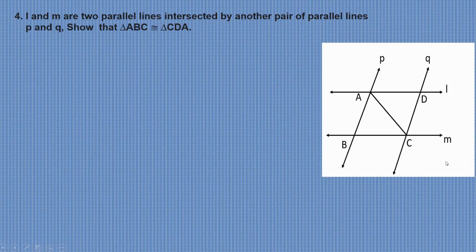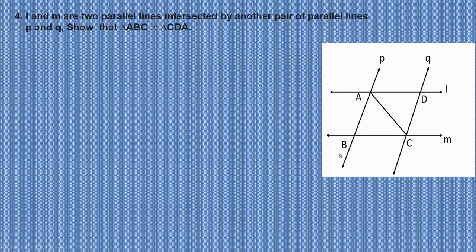L and M are two parallel lines intersected by another pair of parallel lines P and Q. We need to show that triangle ABC is congruent to triangle CDA. Given: L is parallel to M and P is parallel to Q.